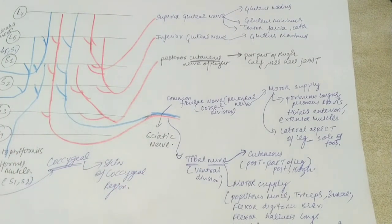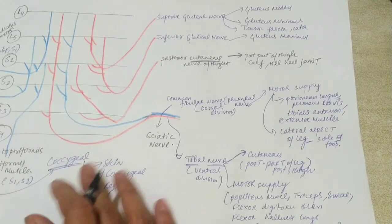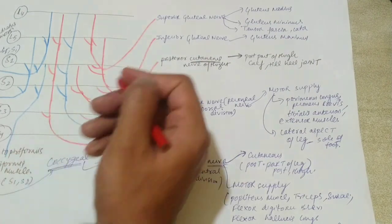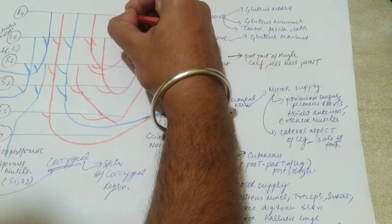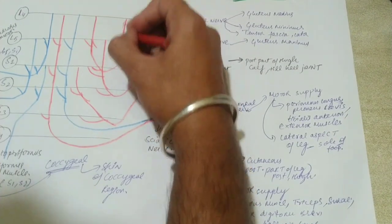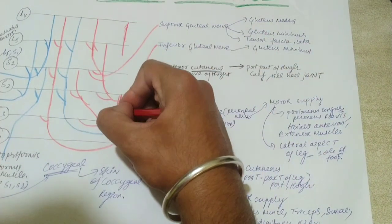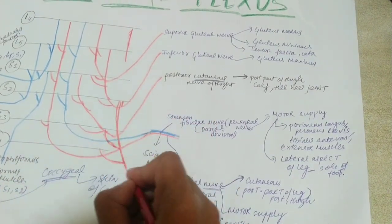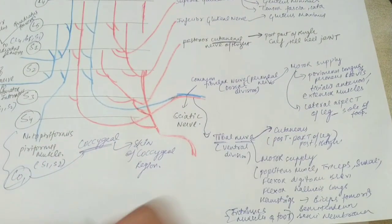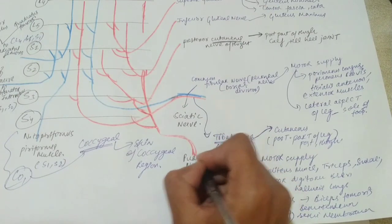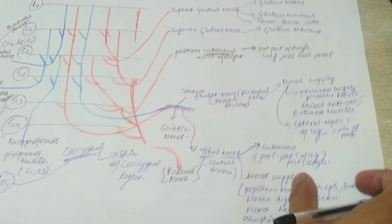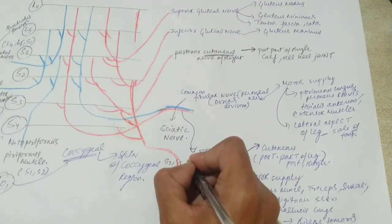We are left with the pudendal nerve. The pudendal nerve arises from S2, S3, and S4 ventral divisions. It exits the pelvis through the greater sciatic foramen, re-enters through the lesser sciatic foramen, passes lateral to the ischio-rectal fossa, and reaches the perineum region where it supplies muscles and skin.